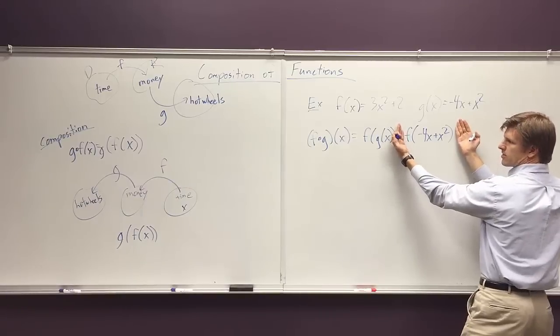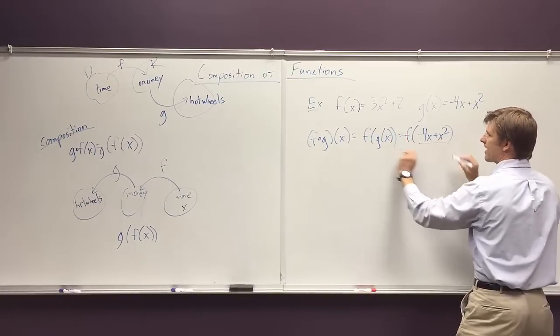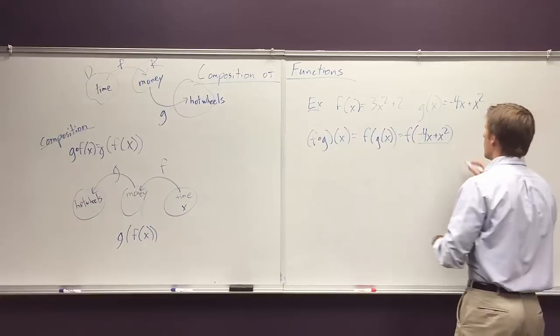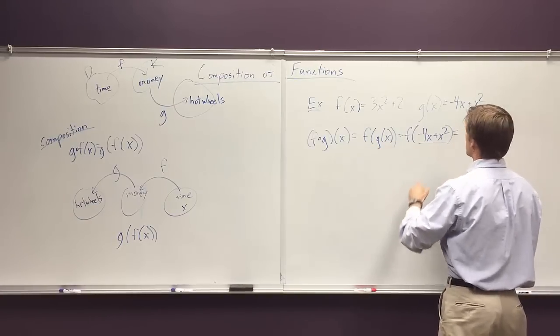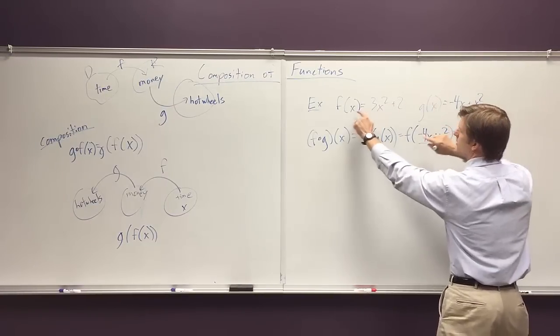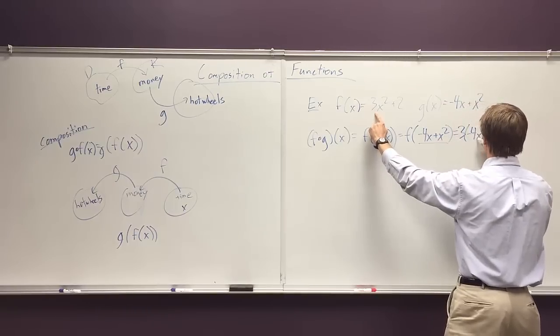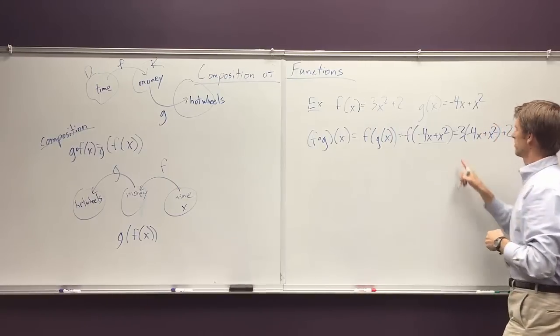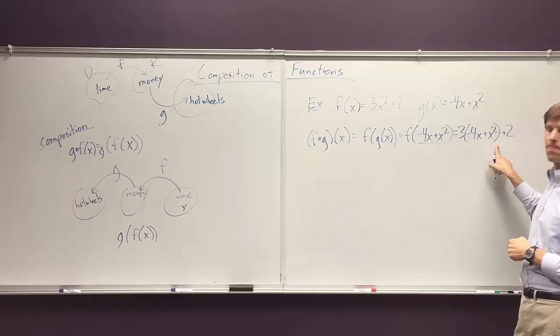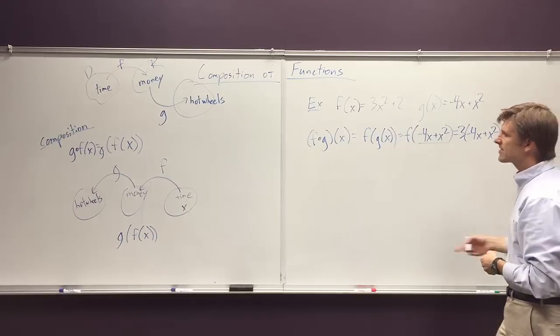If I just showed you this, you'd be able to plug that as the input here. So frankly I often don't write those middle steps. I simply say this is the input, goes in here, so I get 3 times the quantity negative 4x plus x squared squared plus 2. So you can see how that works.